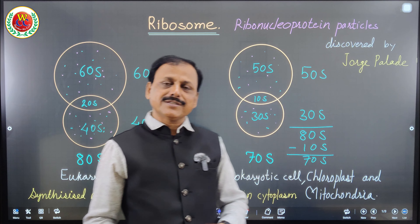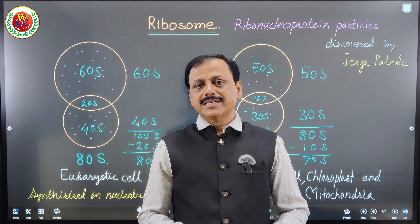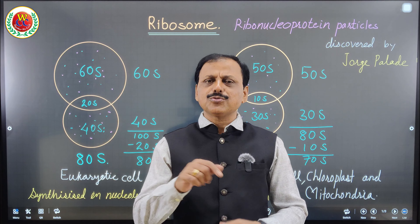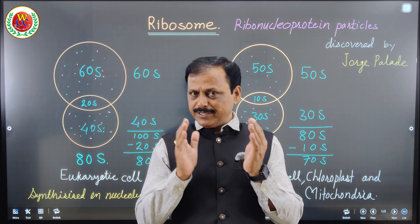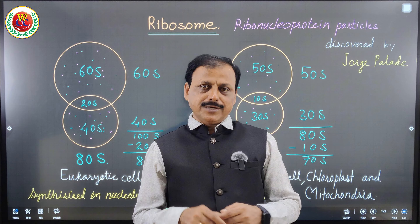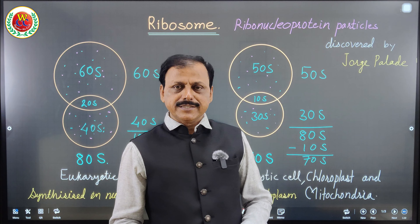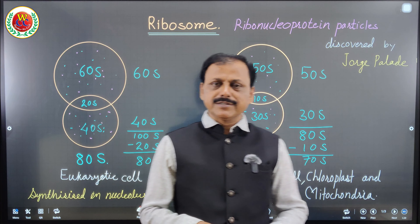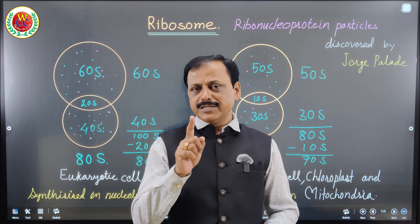These subunits are called Svedberg units — S-V-E-D-B-E-R-G. They are named after the scientist Svedberg because the sedimentation coefficient was discovered by him. Although the ribosome itself was discovered by George Palade, the unit of the subunits is named in respect to the scientist Svedberg, as he discovered the sedimentation coefficient.